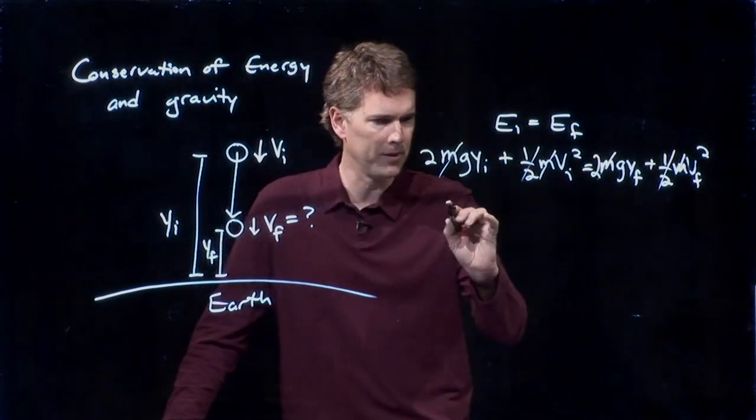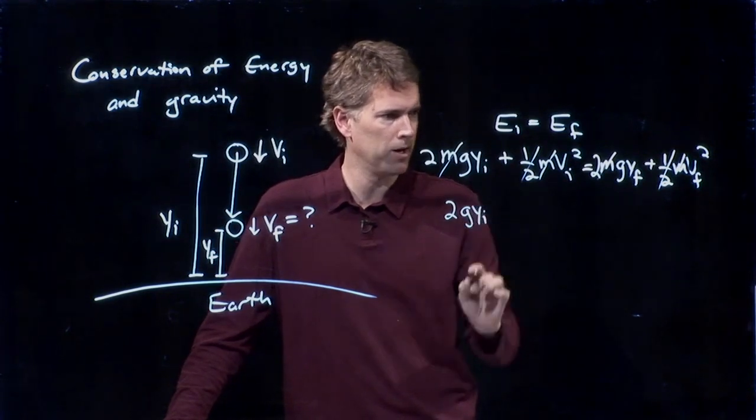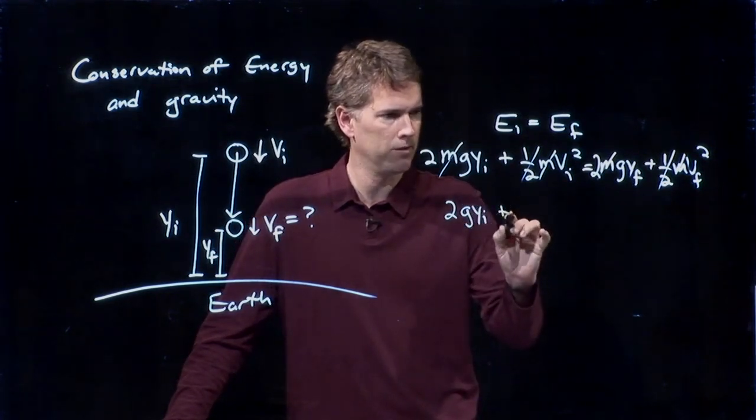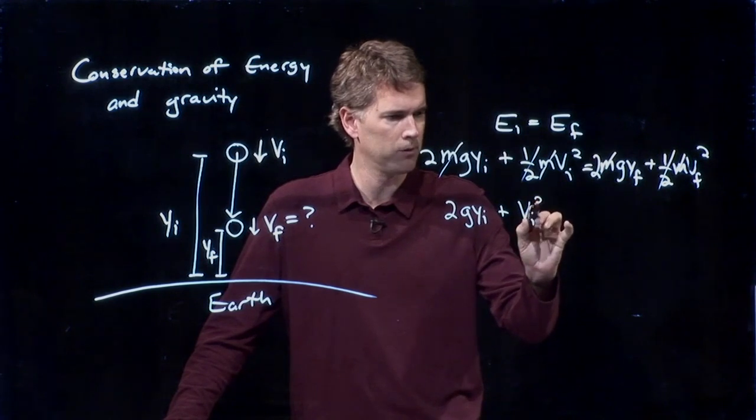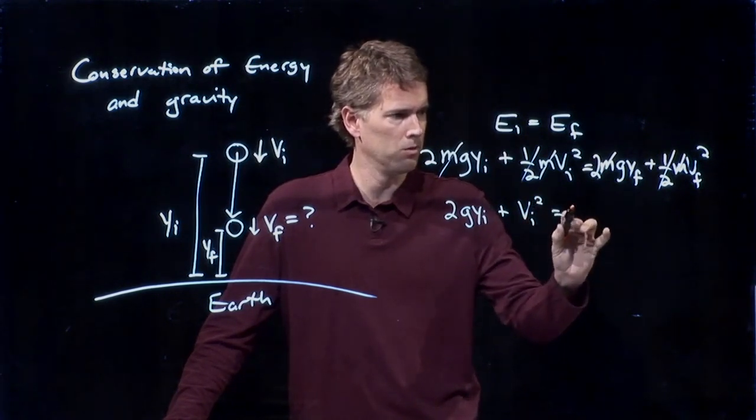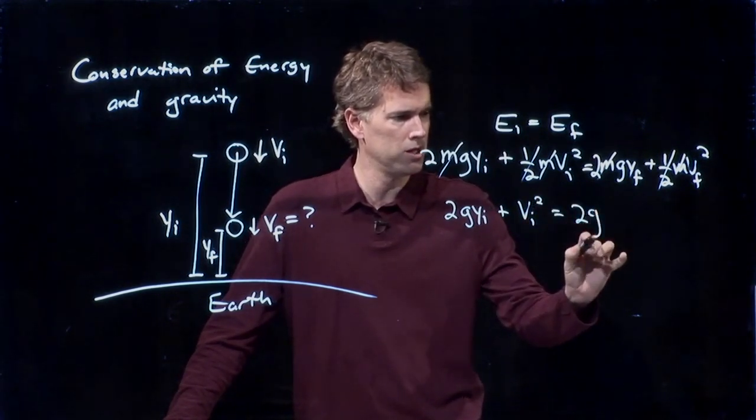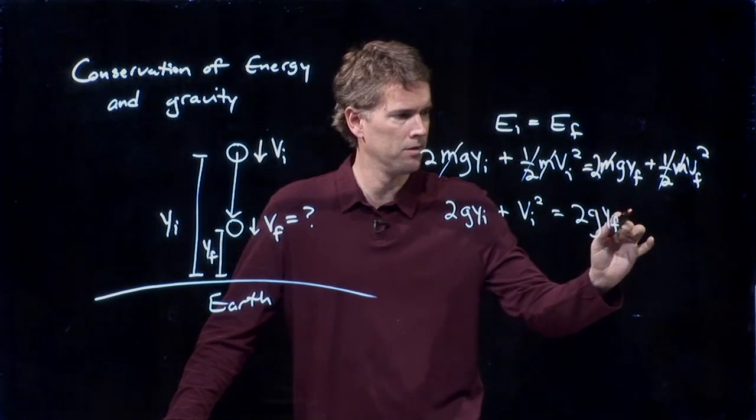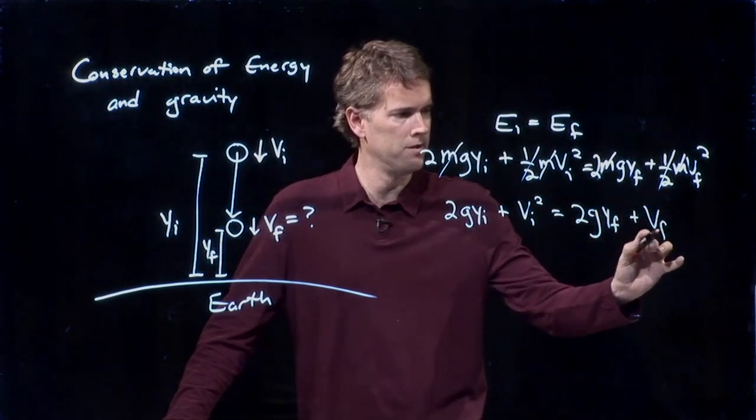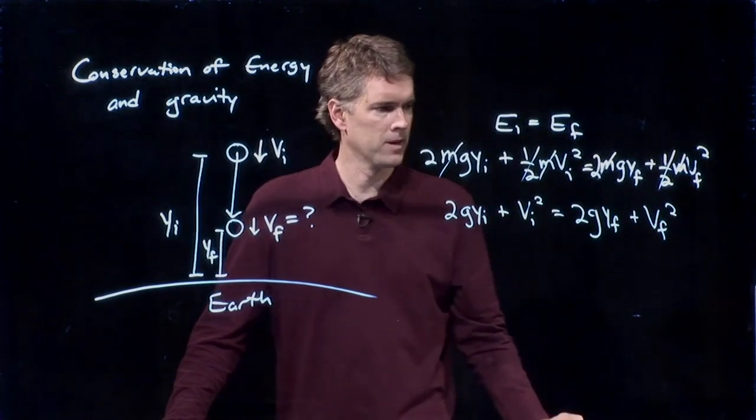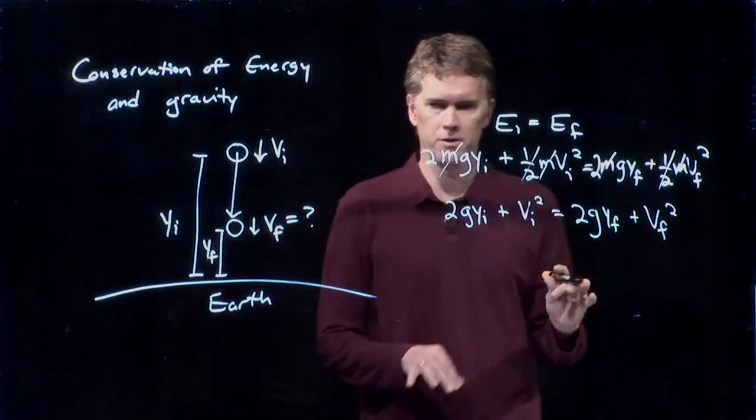And let's just rewrite this line. 2g y_i plus v_i squared equals 2g y_f plus v_f squared. And now, let's rearrange some of these terms.